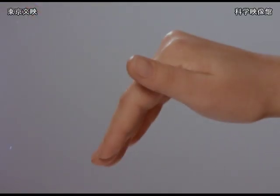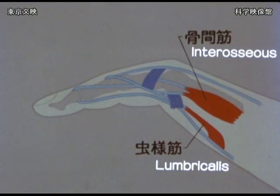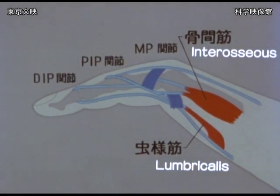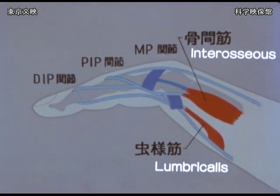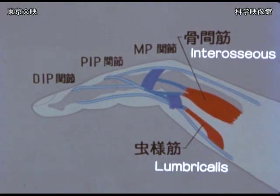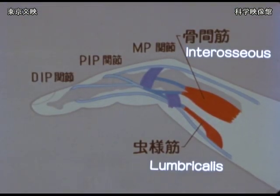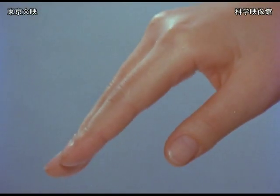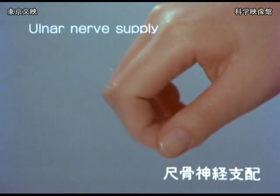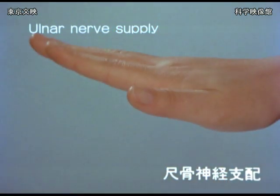Flexion of the MP joints is done by interossei and lumbrical muscles. The interossei muscles perform quite a unique movement. A portion of the interossei fibers attach to the proximal phalanx and act to abduct and adduct the finger. The remaining portion of fiber blends into the lateral band with the lumbrical muscle and flexes the MP joint. The force is further transmitted dorsally to extend the PIP and DIP joints. All the interossei muscles and the lumbricals to the ring and little fingers are innervated by the ulnar nerve.